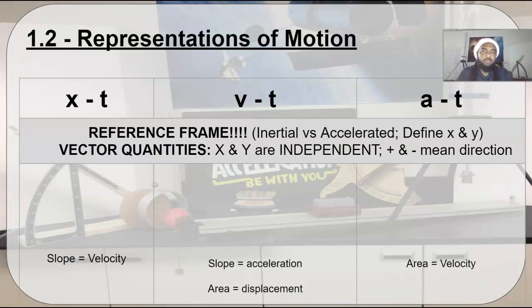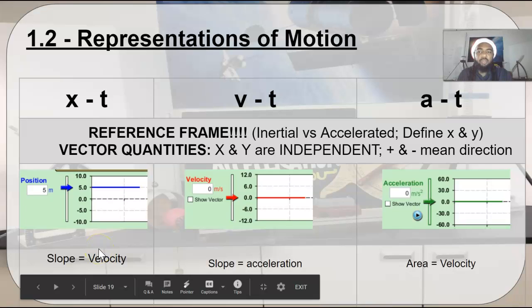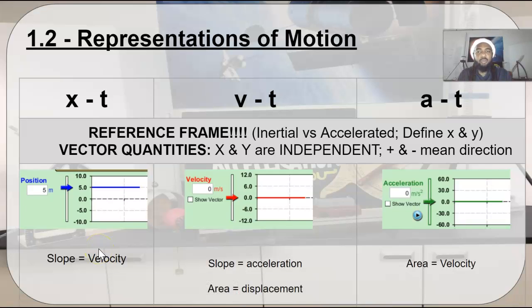On to 1.2 representations of motion. This includes the equations we just mentioned, and also graphs. You should by now be aware that there are these three types of graphs, and if something is not moving, your position time graph would be flat at whatever value corresponds to where that object is. Of course, it's not moving, so its velocity should be zero, and if it's not going to move, its acceleration will also be zero. Now, key concepts here that the slope of your x-t graph is your velocity, and the slope of your v-t graph is your acceleration. All these lines are flat, so all the slopes are zero, hence zero velocity and zero acceleration.